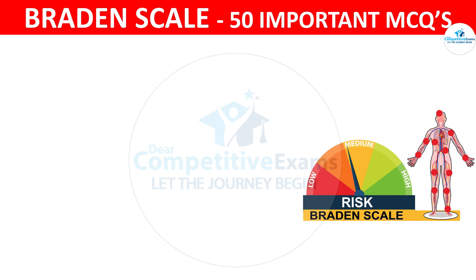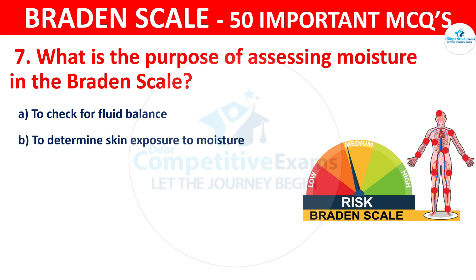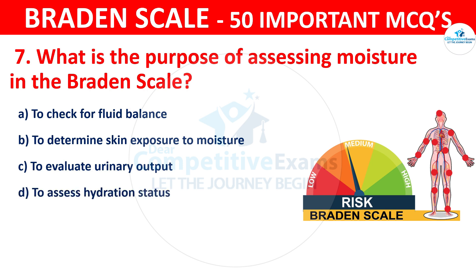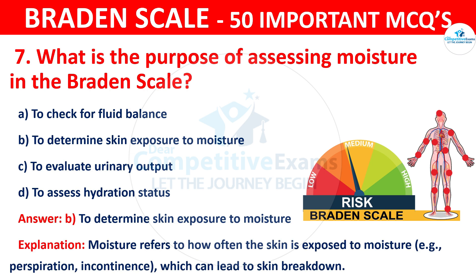Question number seven: What is the purpose of assessing moisture in the Braden scale? The options are to check for fluid balance, to determine skin exposure to moisture, to evaluate urinary output, or to assess hydration status. The correct answer is B — to determine skin exposure to moisture. Moisture refers to how often the skin is exposed to moisture, which can lead to skin breakdown.